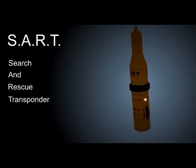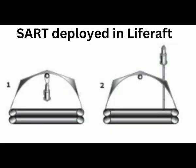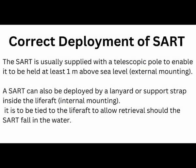You can see how the SART is rigged inside the life raft in this picture. Mostly the SART will be provided with a telescopic pole, which is extended and held at least 1 meter above sea level for external mounting. A SART can also be deployed by a lanyard or strap which is inside the life raft — it will already be present. You simply hang your SART after switching it on inside the life raft, which also helps increase the efficiency of the activated SART.